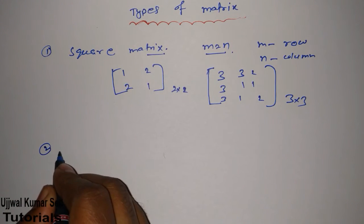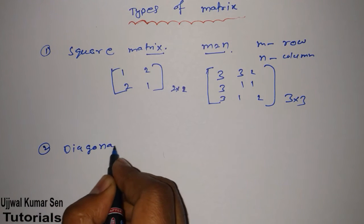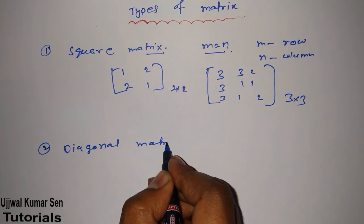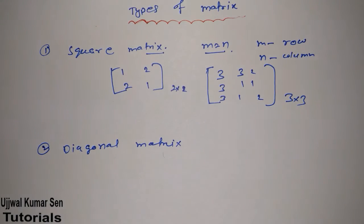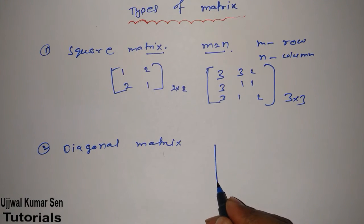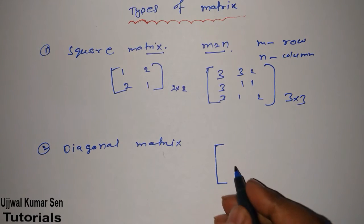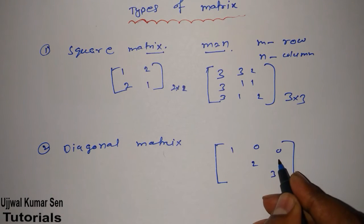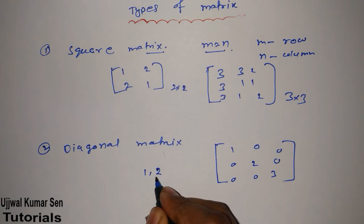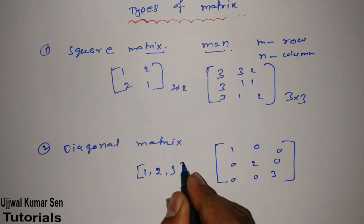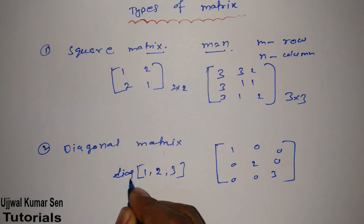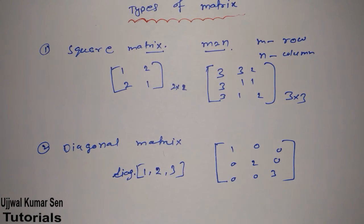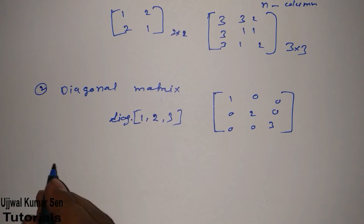Now let's move to the next matrix that is known as diagonal matrix. So what is basically diagonal matrix? When its diagonal elements, non-diagonal elements are 0. So 1 2 3, suppose these are diagonal elements. So this is the diagonal matrix of 1 2 and 3. This matrix is known as diagonal matrix.